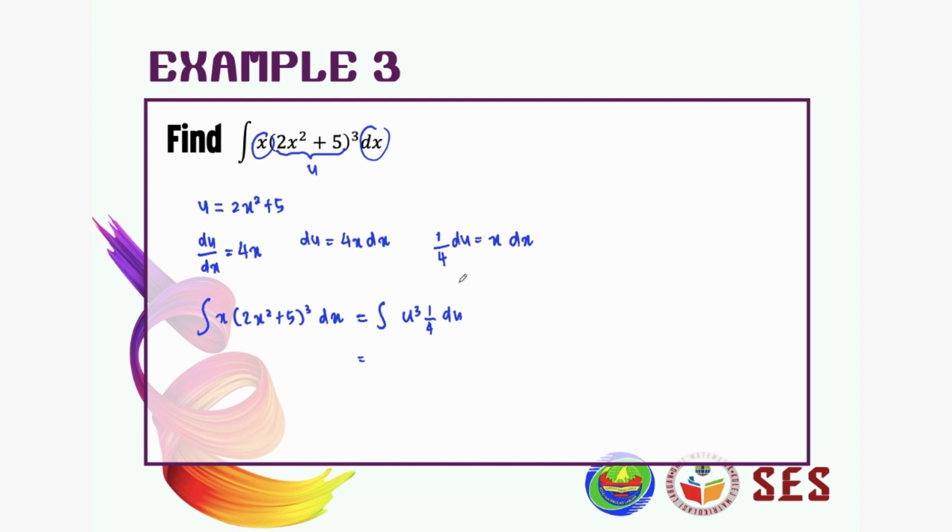From the basic rules of integration that we already learned, we know that we can bring the constant to the outside. So we can bring 1 over 4 over here, and we just need to integrate u to the power of 3 du.